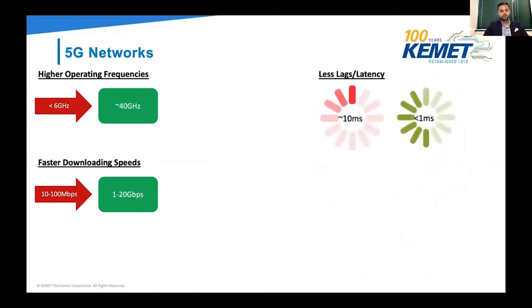Let's talk about the 5G networks we'll have soon. The operating frequencies will go up to about 40 gigahertz. The downloading speeds will be significantly faster, up to 20 gigabits per second, and we'll have less lag and lower latency. The time it takes for two devices to communicate with each other is expected to be 50 times faster, so downloading a high definition full-length movie will only take seconds, compared to 5 to 20 minutes today.